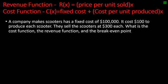The revenue function R(x) is the price per unit sold times x, the amount sold. The cost function is the fixed cost plus the cost per unit produced times x. A company makes scooters with a fixed cost of $100,000. It costs $100 to produce each scooter. They sell the scooters at $300 each. What is the cost function, the revenue function, and the breakeven point? The cost is C(x) equals $100,000 plus $100x.